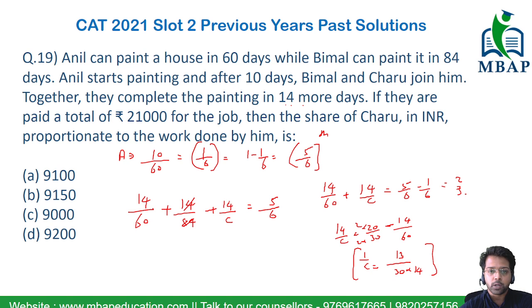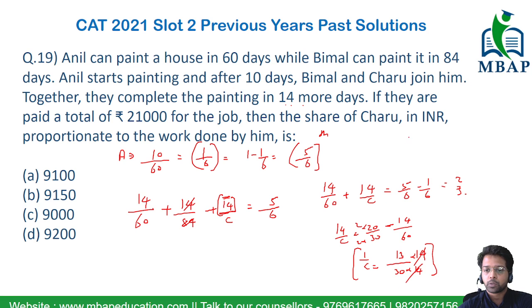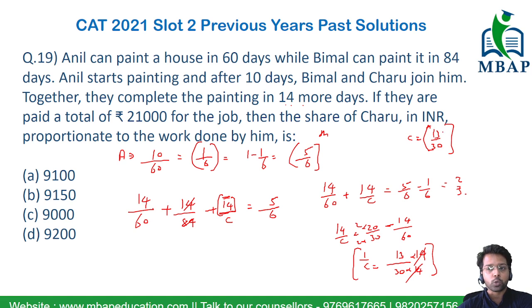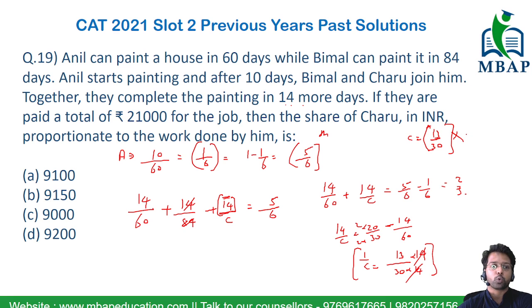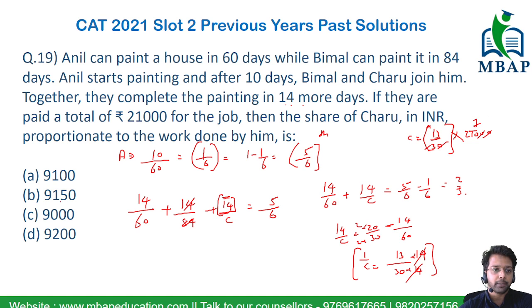So C's one-day work is 13/(14 × 30). C is remunerated for 14 days of work, so C's total work over 14 days is 14 × 13/(14 × 30). The 14s cancel, giving C's proportion of total work as 13/30. Since C's proportion of work from the total is 13/30, C will be accountable for 13/30 of the total earnings as well.